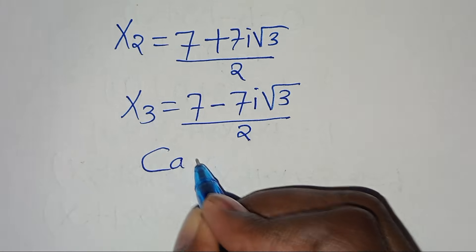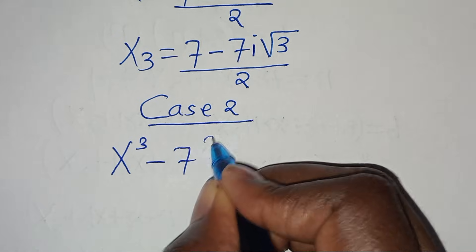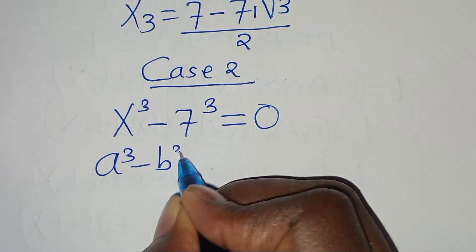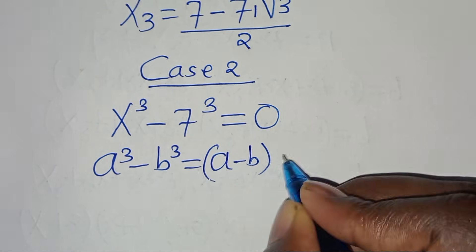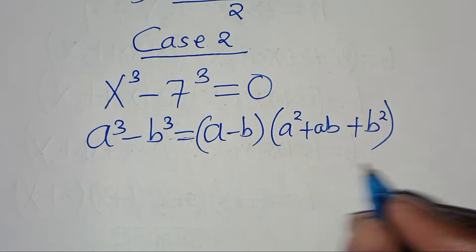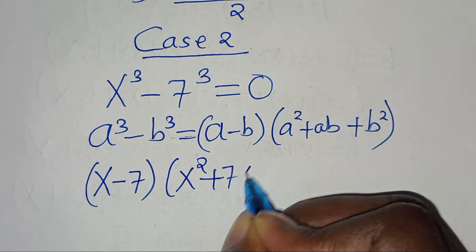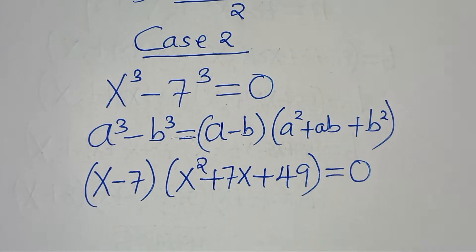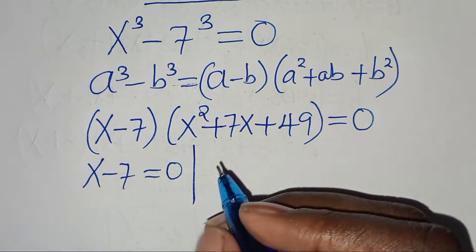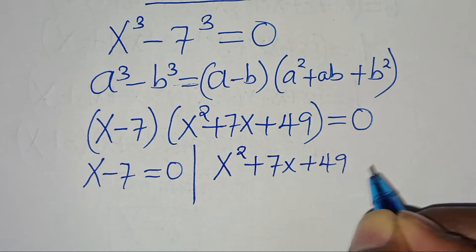Now let's proceed to Case 2. In Case 2, we have x to the power of 3 subtract 7 to the power of 3 equals 0. This equation is in the form a cubed minus b cubed, which we can express as a minus b times a squared plus a times b plus b squared. Applying this identity, we have x minus 7 times x squared plus 7x plus 49 equals 0. So we have two parts: the first part is x minus 7 equals 0, and the second part is x squared plus 7x plus 49 equals 0.